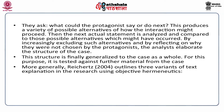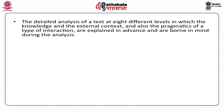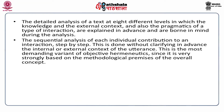Ridge outlines three variants of text explanation in research using objective hermeneutics. The first is the detailed analysis of a text at eight different levels in which the knowledge, the external context, and also the pragmatics of a type of interaction are explained in advance and borne in mind during the analysis. The second is the sequential analysis of each individual contribution to an interaction step by step.